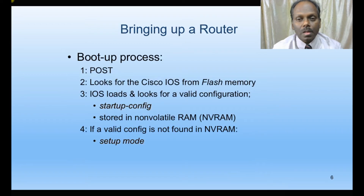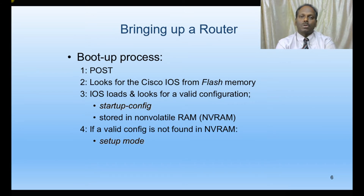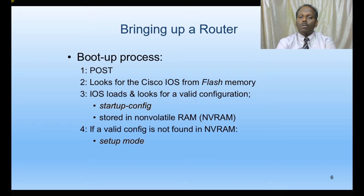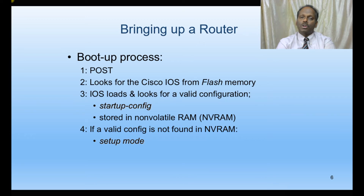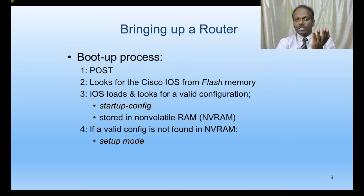Every device when powered on runs a power-on self test. Cisco routers also contain an operating system called the Internetworking Operating System — IOS stands for Internetworking Operating System, not iPhone OS. The router has flash memory where the operating system resides. Configurations are stored in non-volatile RAM, NVRAM, which is different from SDRAM. SDRAM is used for main memory and is volatile; NVRAM is non-volatile.